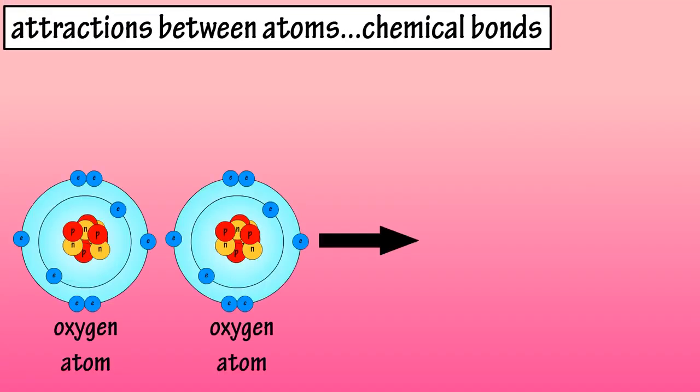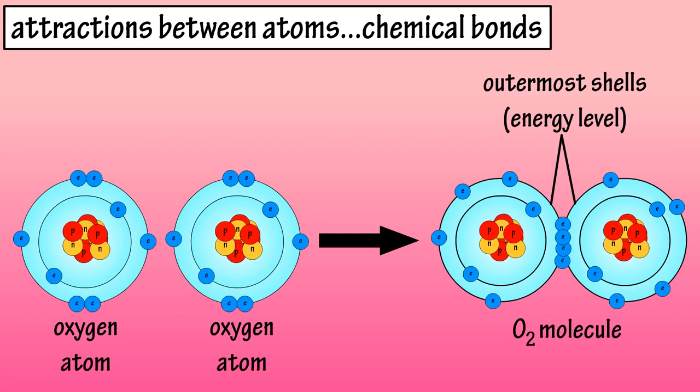Chemical bonds. The interactions of two or more atoms mainly occur at the outermost shell or energy level. The consequence of these interactions results in a chemical reaction.